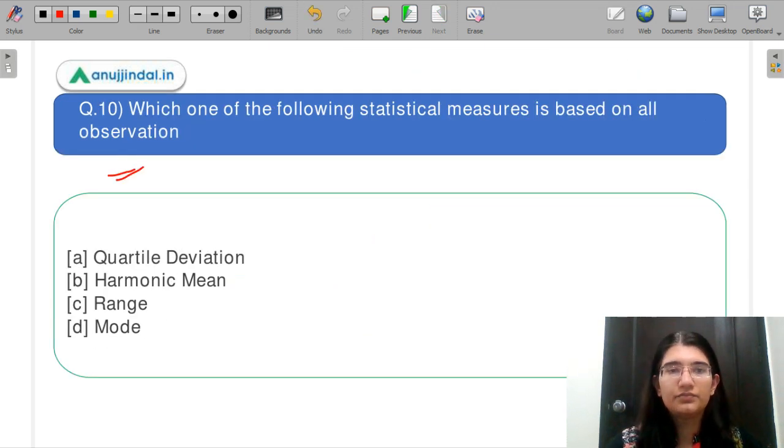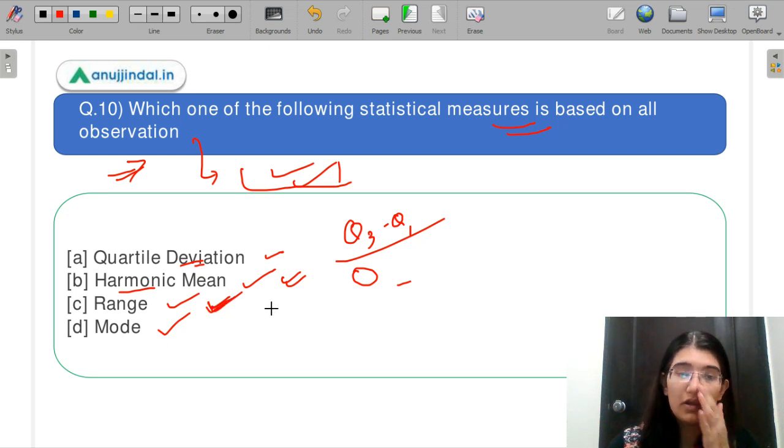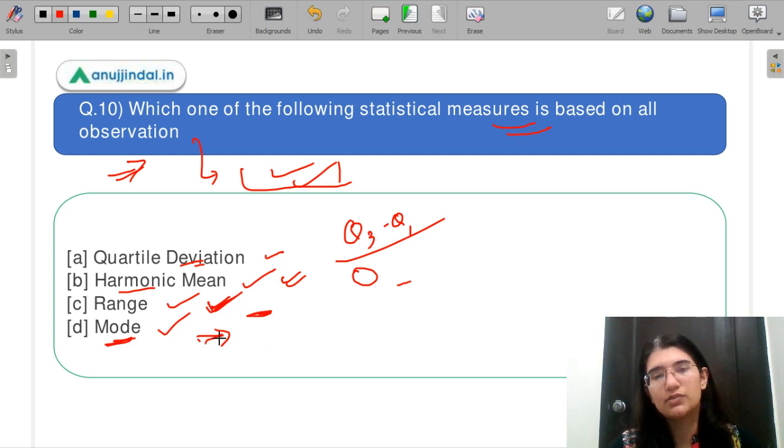Let us move on to question number 10. Which of the following statistical measure is based on all observation? Quartile deviation, harmonic mean, range, or mode. Which of the following statistical measure is based on all the observation? Saari observation ko use karke, kaun sa in mein se ek statistical jo tool hai, hum use karte hain. Quartile deviation, sirf quartiles ke beech mein deviation hoti hai. Harmonic mean, abhi humne pada hai, ki saari observation ko leta hai, aur uske reciprocal ka sum dekhta hai. Range mein bhi, you do not use all the observation. You are only calculated for the mean part. Mode mein bhi, aap yeh dekhta hai, ki sabse zyada baar, kaun sa humara ek observation aayi hui liya hai. So the correct option here will be B part.